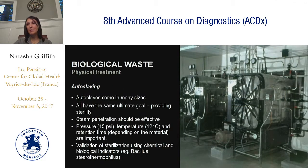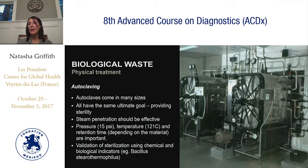Autoclaves come in many sizes. The ultimate goal is providing sterility, achieved by high steam at high temperature and certain pressure. The minimum temperature we try to achieve is 121°C, and the pressure is usually 15 PSI. When we validate the machine, we validate that it reaches the required temperature — 121°C or higher — and the required pressure inside the chamber, because that's how we can tell the machine is doing what it's supposed to do.